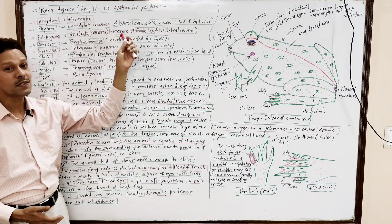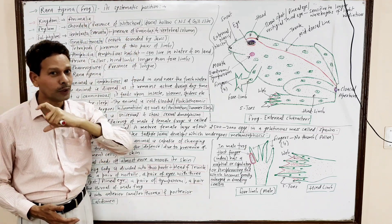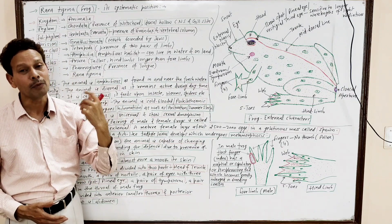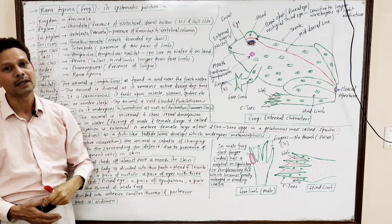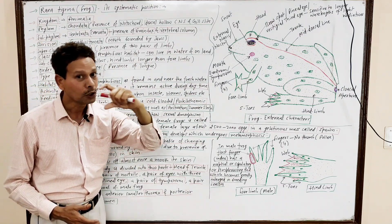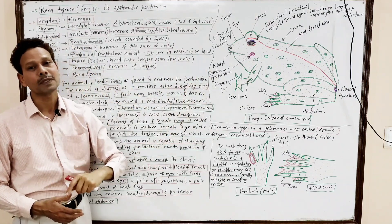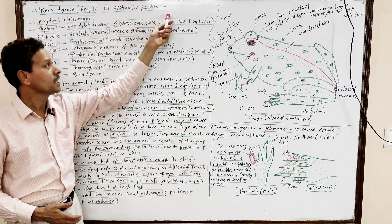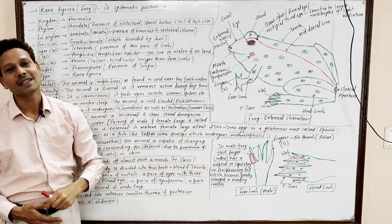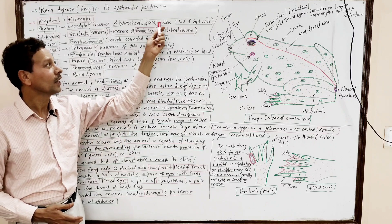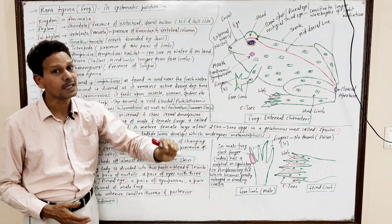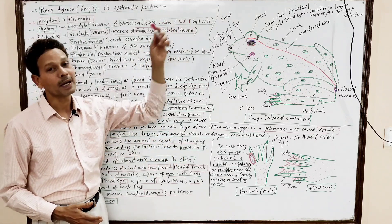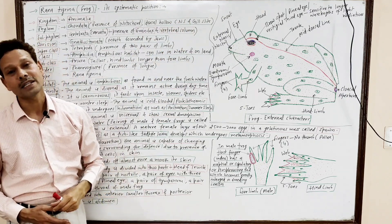The phylum Chordata is characterized by the presence of a notochord during embryonic stages. At the time of development, a solid notochord develops in the dorsal region, as well as a hollow central nervous system. Notochord is present, and there is presence of gill slits.